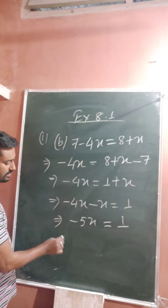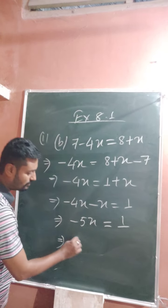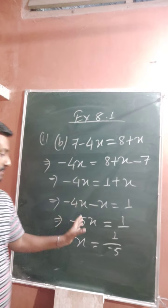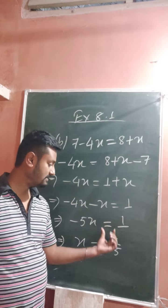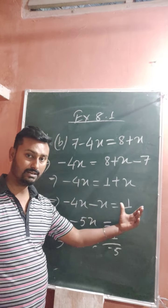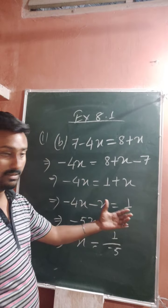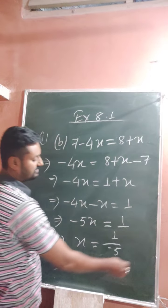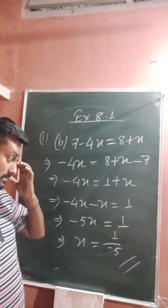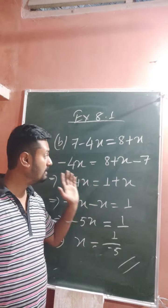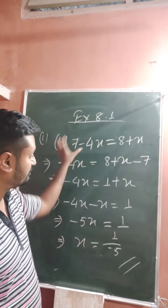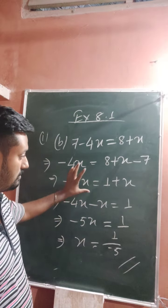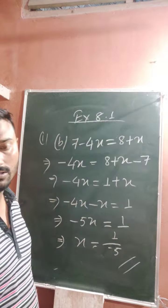So minus 5 is multiplied with x. When it goes to the other side of the equals sign, it becomes division. Always remember: multiplication becomes division, division becomes multiplication, addition becomes subtraction, and subtraction becomes addition. So x equals minus 1 divided by 5, which is the short method. In the next class all of you will do equations like this. In class 6, you can solve these problems using both methods.